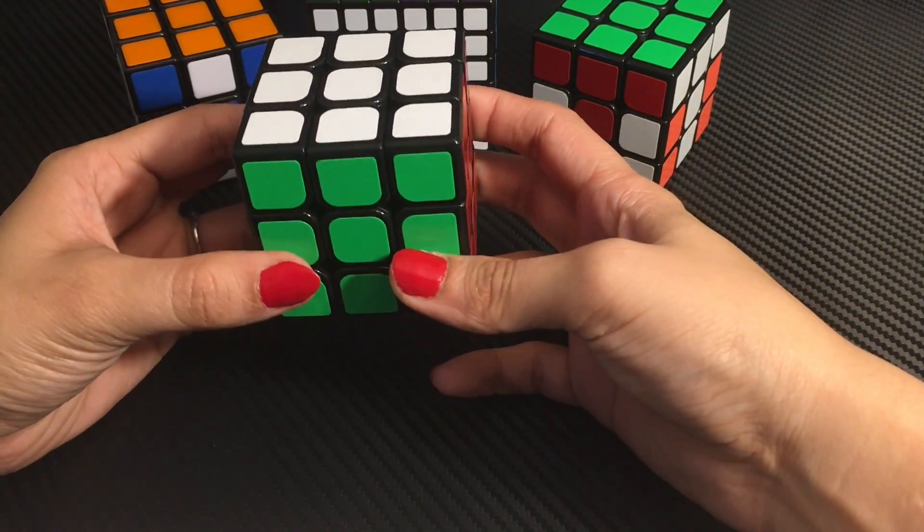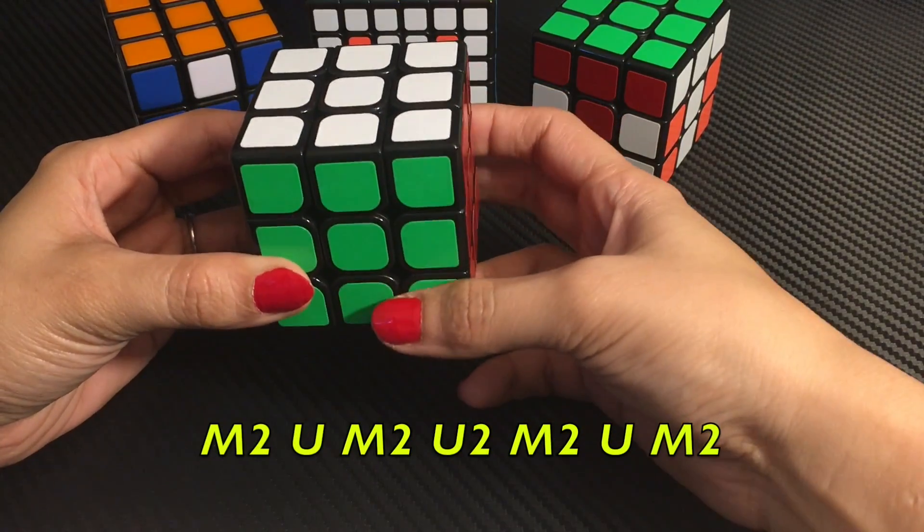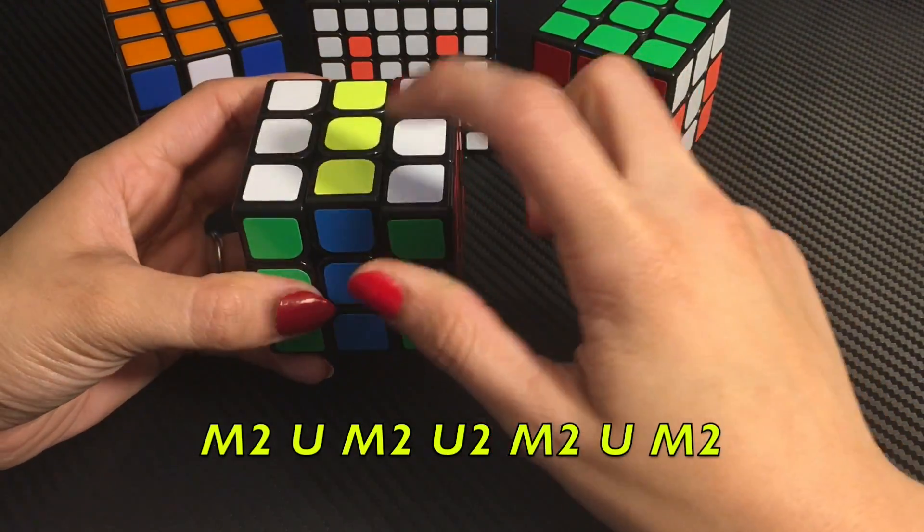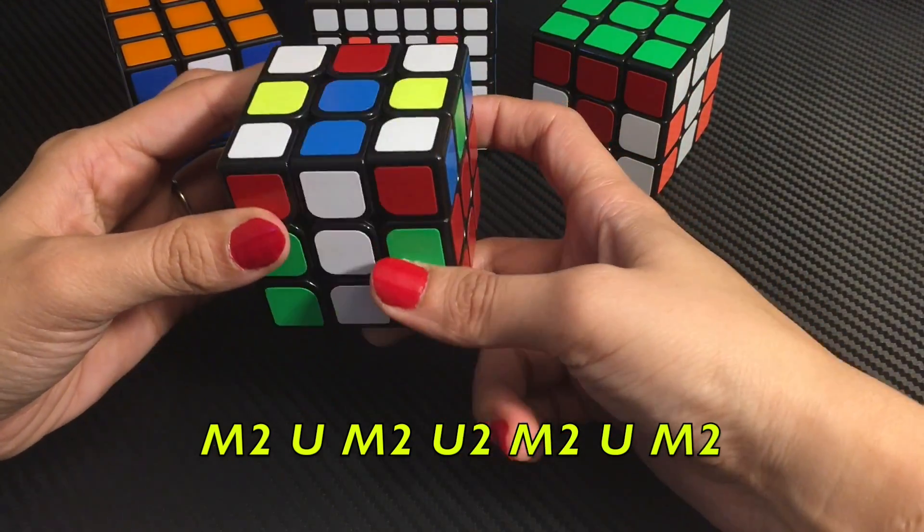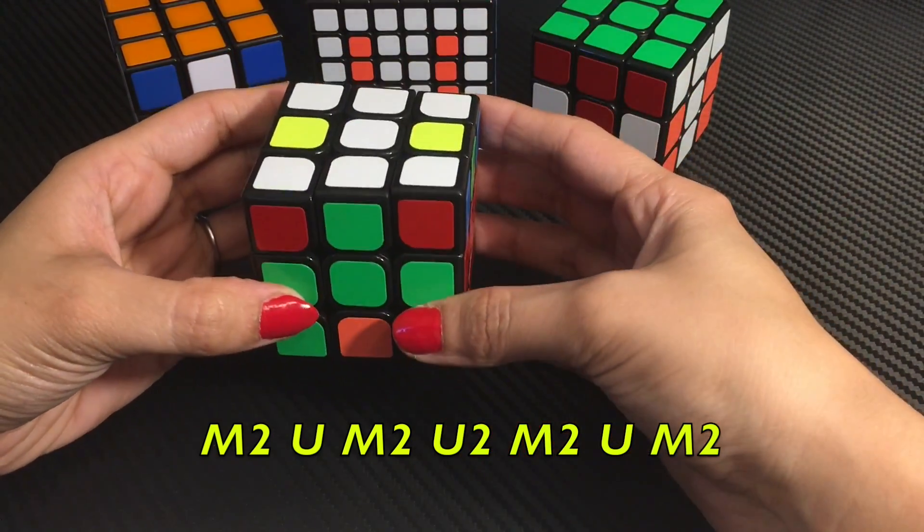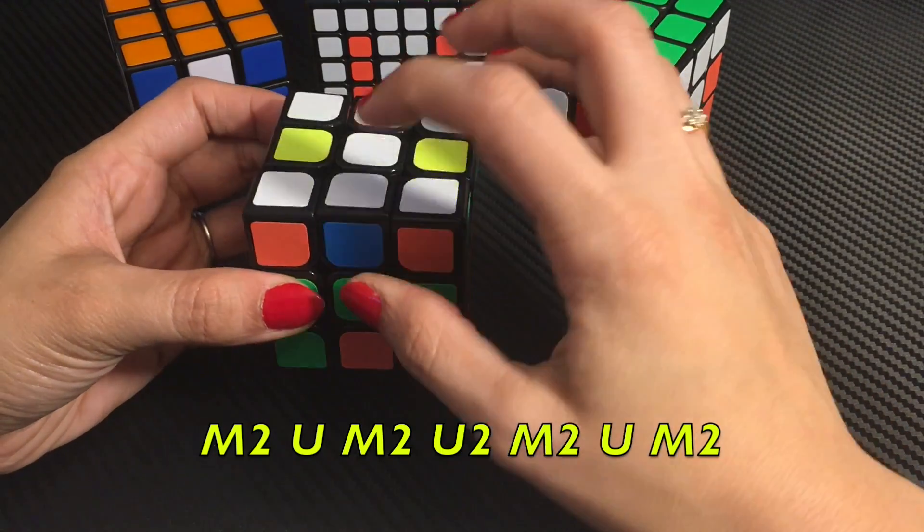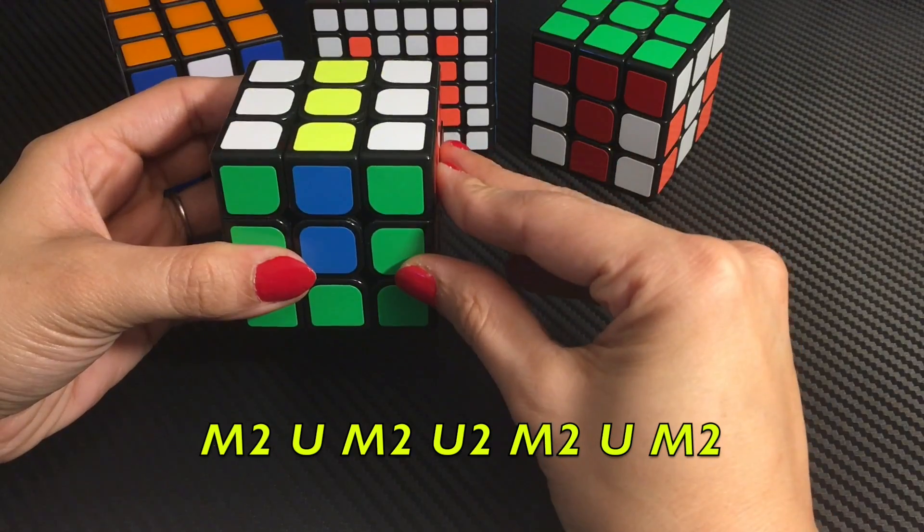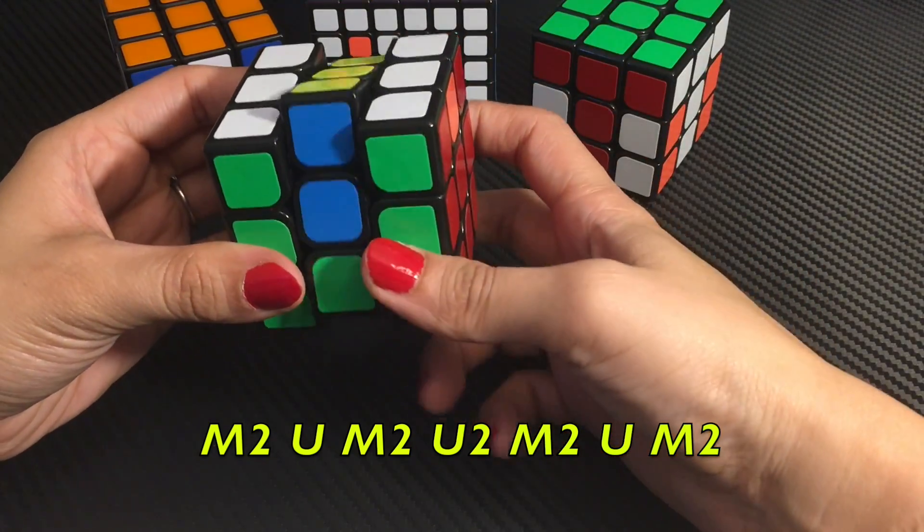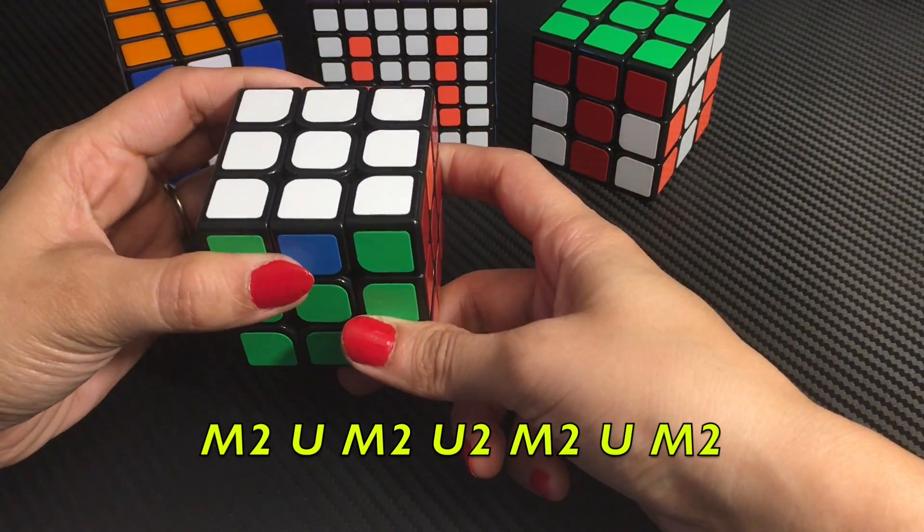Let's see this. We have 2x3 cubes in the middle layer. M2, then upper layer U, then middle layer M2, then upper layer 2x U2, then middle layer 2x M2, then upper layer 1x U, and 1x last time middle layer 2x. So, M2. Okay?